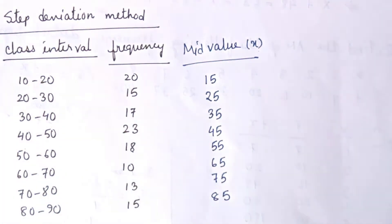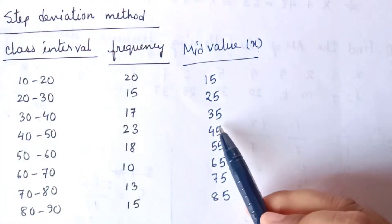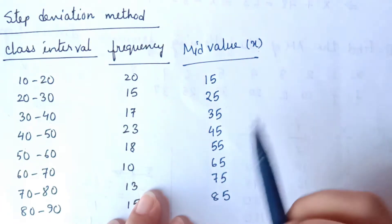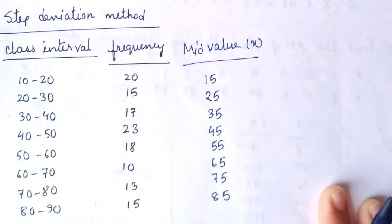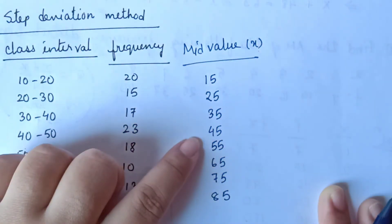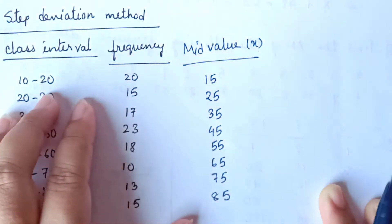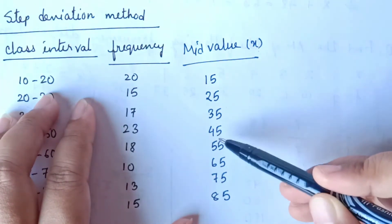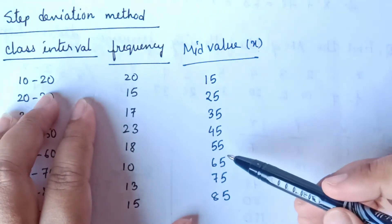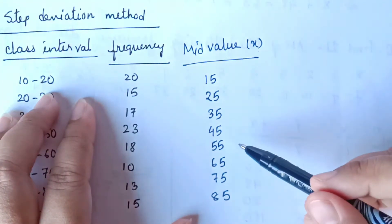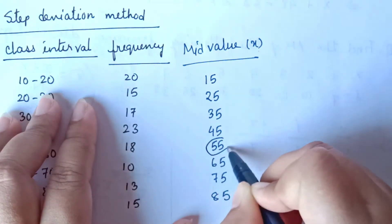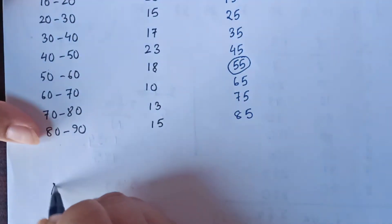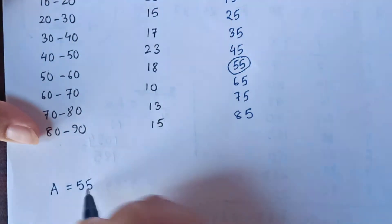After that, we will select one of the mean values as the arithmetic mean. In step deviation method, we assume any one of these mean values, and we select any one of these values as A, the assumed mean. So we assume 55, and we write down A is equal to 55.